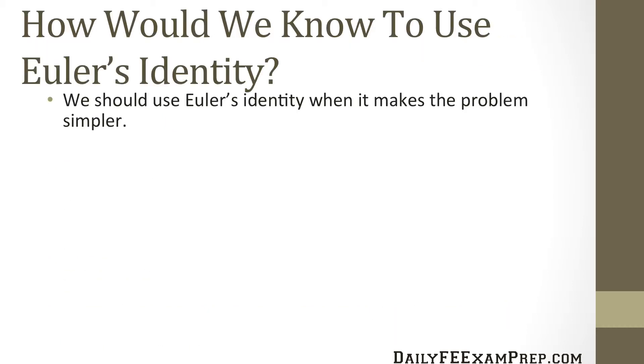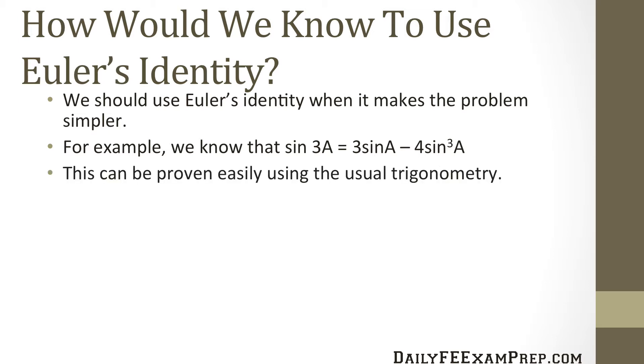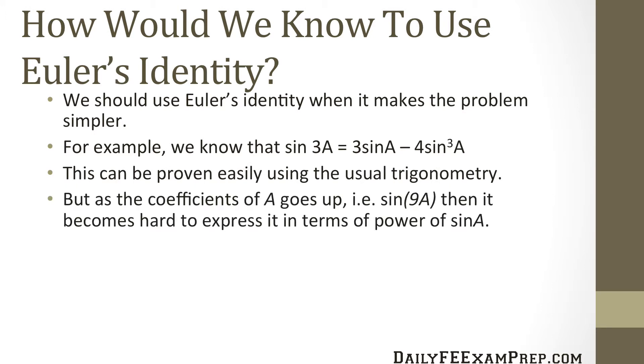So how do we know when to use Euler's identity? We should use Euler's identity when it makes the problem simpler. For example, we know that sine of 3A equals 3 sine A minus 4 times the sine cubed of A. This can be proven using the usual trigonometry, but as the coefficients of A goes up, for example sine of 9A, then it becomes harder to express in terms of the power of sine A. Now we know it's time to use Euler's identity.